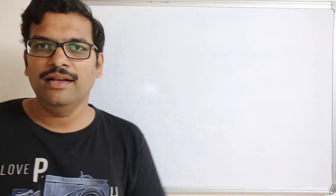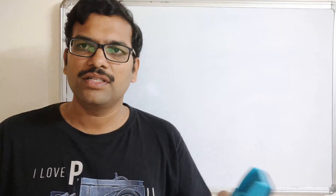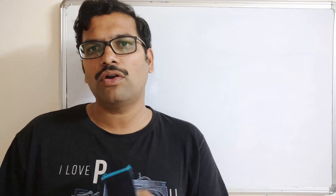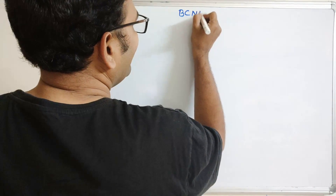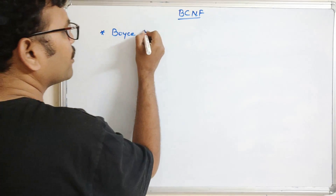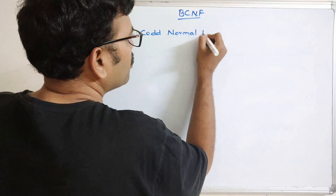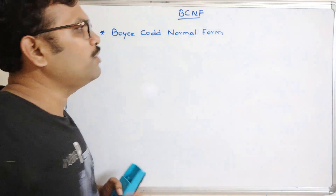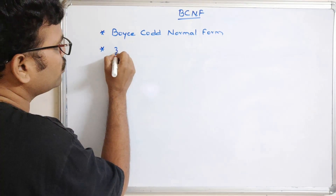Hello friends, welcome back to our channel. In the previous session we discussed about Third Normal Form, and in this session we'll discuss one more normal form — that is BCNF, Boyce-Codd Normal Form, which is also known as 3.5 Normal Form.